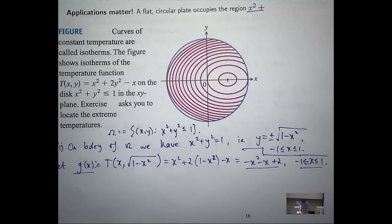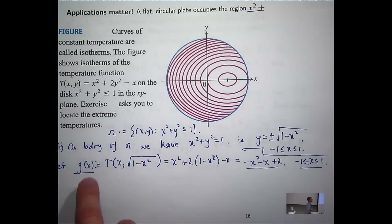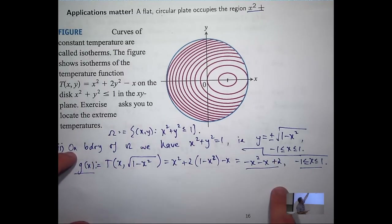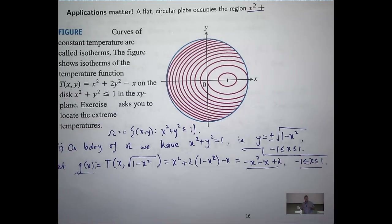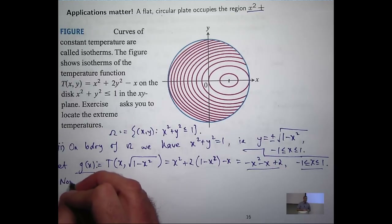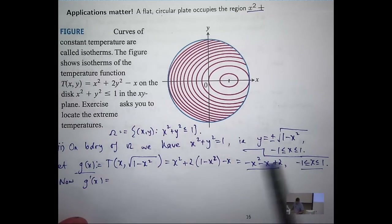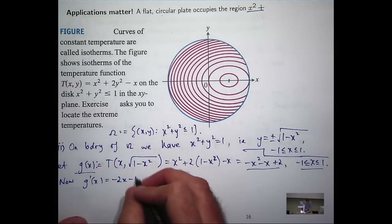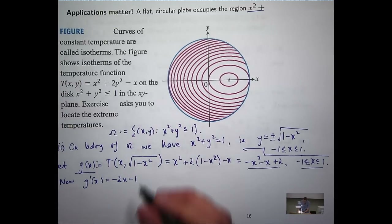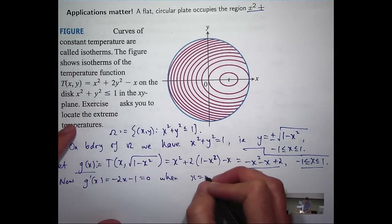How would you calculate the maximum and minimum values of g for x between minus one and one? You could calculate the critical points of g: set g prime equal to zero, work out the value of g at that point, and also test the end points. So if I differentiate here, I'm going to get something like minus 2x minus 1, and that equals zero when x equals negative one half.